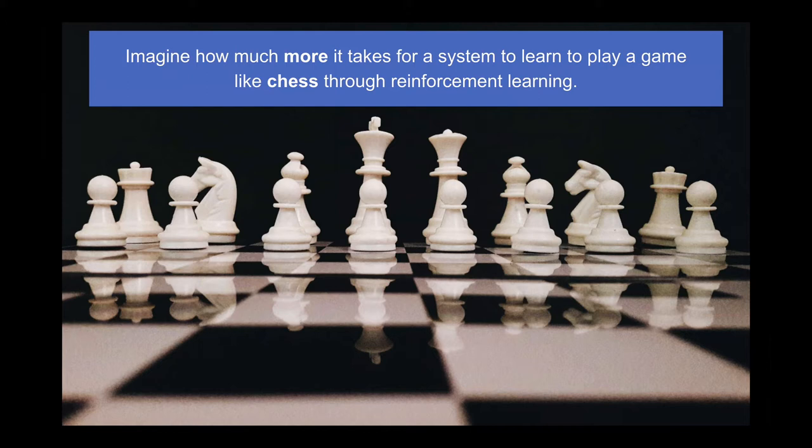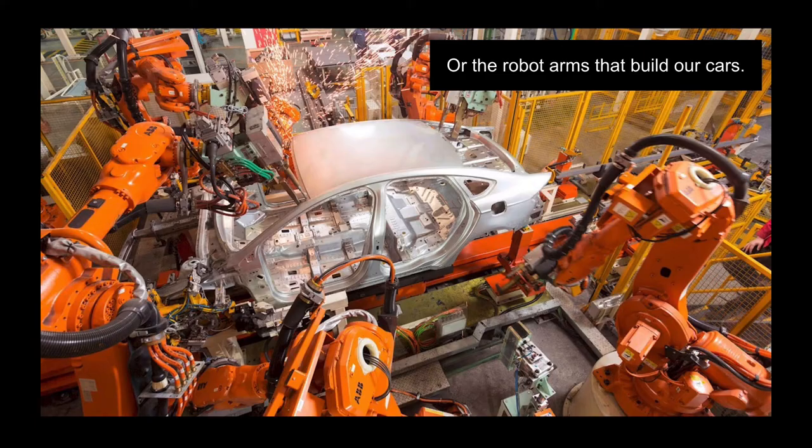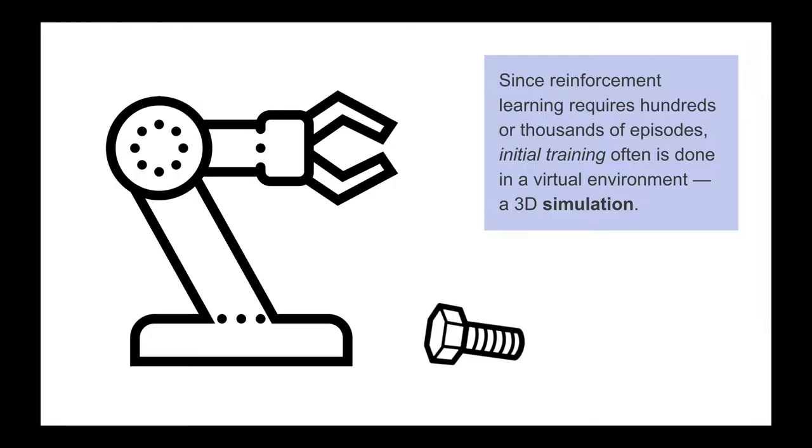Imagine how much more it would take compared with Mitchell's simple robot-and-ball example if you were trying to get a system to learn chess, or train manufacturing robots to do the right thing when a car on the assembly line is in the right position. Training a real physical robot takes even longer because the robot can only move so fast, and if it drops something a human may have to intervene. That's why a lot of this training is done in simulations.